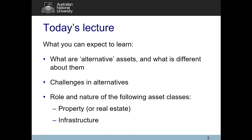Today we're going to talk about what alternative assets are — or more specifically what they're not — and what's different about them compared to traditional asset classes. We'll look at the challenges in alternatives, and our first two alternative asset classes: property and infrastructure. For property, we talk about two different types: listed, and unlisted or direct. Unlisted property and direct property are the same thing. There is also separately listed property, and it can be useful to combine them in your asset allocation.